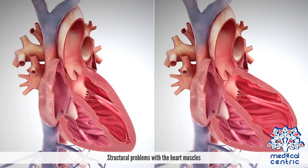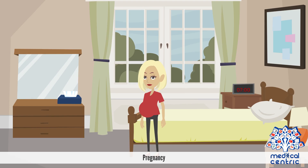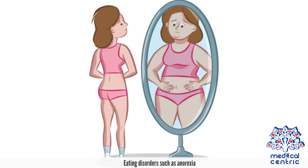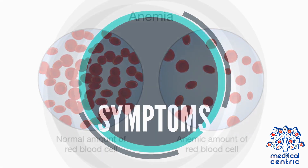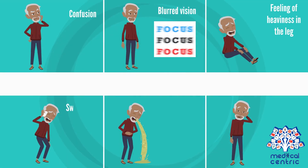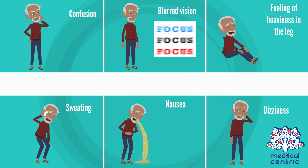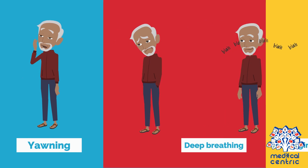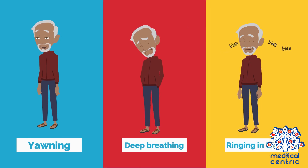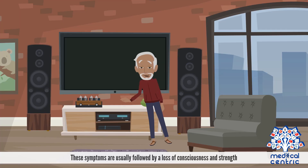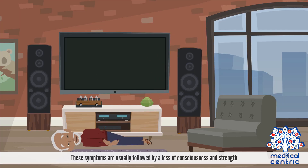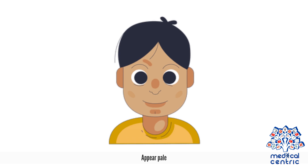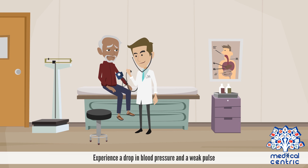Other causes include structural problems with the heart muscles, pregnancy, eating disorders such as anorexia, and anemia. Symptoms of fainting include confusion, blurred vision, a feeling of heaviness in the legs, sweating, nausea, dizziness or lightheadedness, yawning, fast deep breathing, and ringing in the ears. These symptoms are usually followed by a loss of consciousness and strength. After fainting, the person may appear pale, experience a drop in blood pressure, and have a weak pulse.